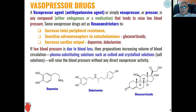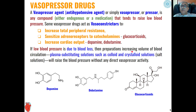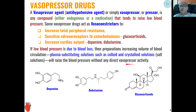These drugs are used to raise low blood pressure in a patient to normalize it. Low blood pressure may be due to blood loss, in which case preparations that increase the volume of blood circulation — such as plasma-substituting solutions like colloids or crystalloid solutions — can be used to increase blood pressure, without requiring direct vasopressor activity.